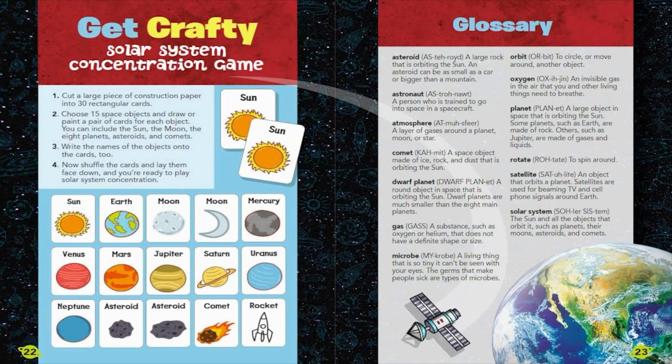Get crafty Solar System Concentration Game. 1. Cut a large piece of construction paper into 30 rectangular cards. 2. Choose 15 space objects and draw or paint a pair of cards for each object. You can include the Sun, the Moon, the eight planets, asteroids, and comets. 3. Write the names of the objects onto the cards, too. 4. Now shuffle the cards and lay them face down and you're ready to play Solar System Concentration.